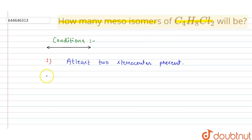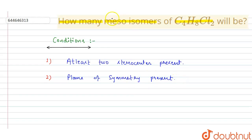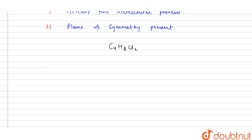The second condition is: a plane of symmetry must be present. These two are the main conditions for a compound to be a meso isomer. For the compound C4H8Cl2, we will first make all the isomers and determine which are meso and which are not.